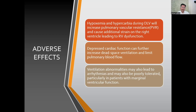Ventilation abnormalities may also lead to arrhythmia, which is poorly tolerated in patients with marginal ventricular dysfunction. Whenever the patient desaturates or PA pressures rise during one lung ventilation in CABG, the first step is to switch to two-lung ventilation, keep FiO2 at 1.0, wait for the patient to stabilize, and then proceed.